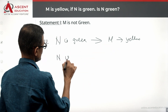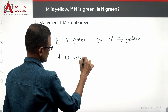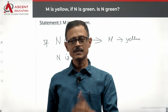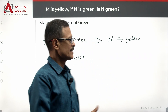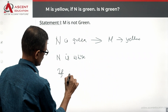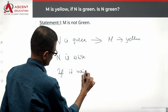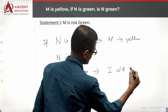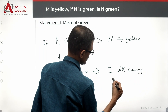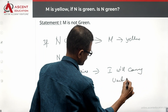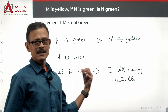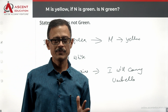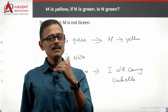For example, consider the analogy: if it rains, I will carry an umbrella. If it does rain, I will definitely carry an umbrella. But just because I'm not carrying an umbrella doesn't mean it isn't raining — wait, actually if I'm not carrying an umbrella, it means it's not raining. This analogy illustrates the conditional logic in the question.